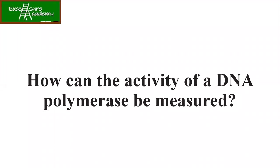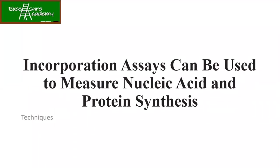Today we are going to talk about how the activity of DNA polymerase can be measured. We talked about DNA getting synthesized with the help of DNA polymerase. Now, DNA polymerase ki activity haam kaise measure kar sakte hai? And the answer is: the incorporation assay. This is the method or technique you are going to use to measure nucleic acid synthesis.